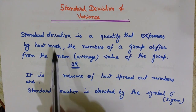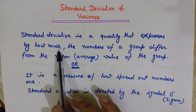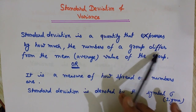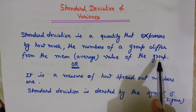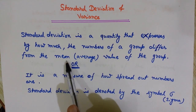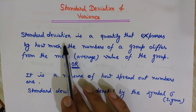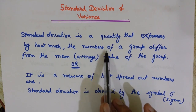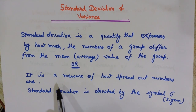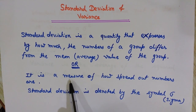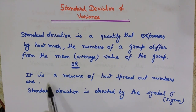What is standard deviation? The standard deviation is a quantity that expresses by how much the numbers of a group differ from the mean value of the group. Suppose we have a group of numbers and we find the mean or simple average of these numbers — the standard deviation tells us by how much the numbers are differing from this mean value. In other terms, standard deviation is simply a measure of how spread out the numbers are.